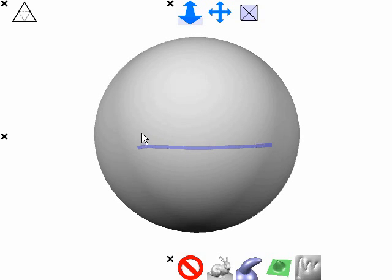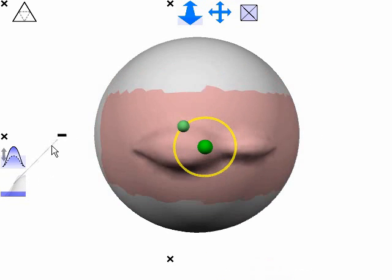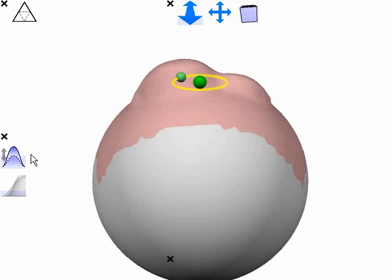We can also create a displacement along a surface curve with an optional height profile curve. Here, the width of the displacement is proportional to its height.